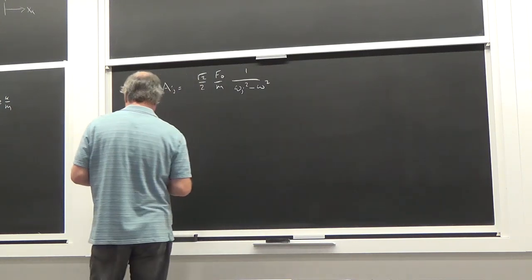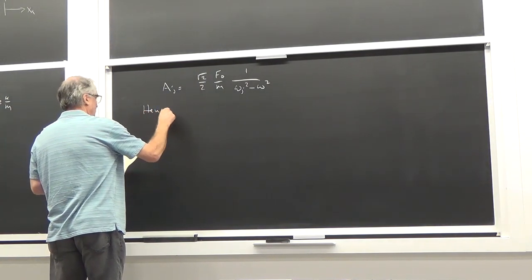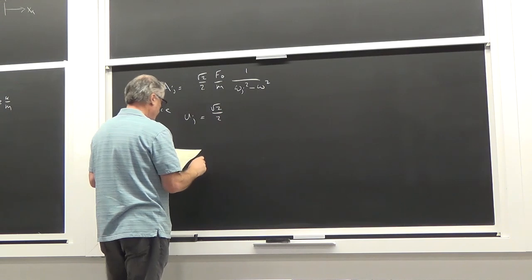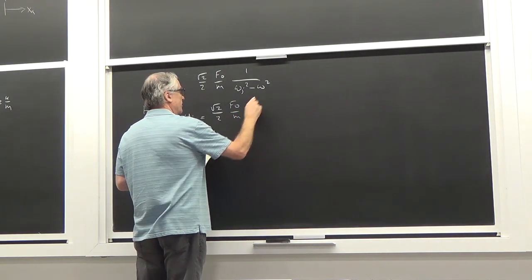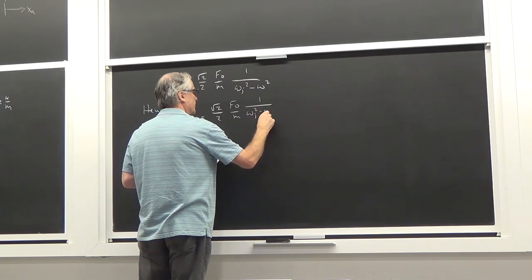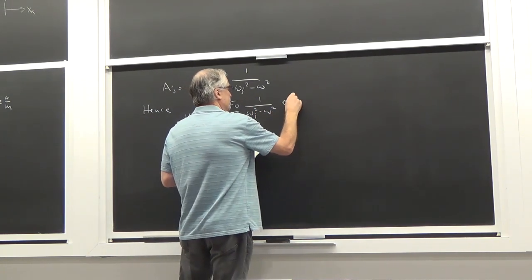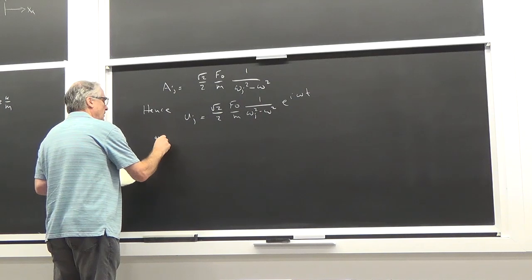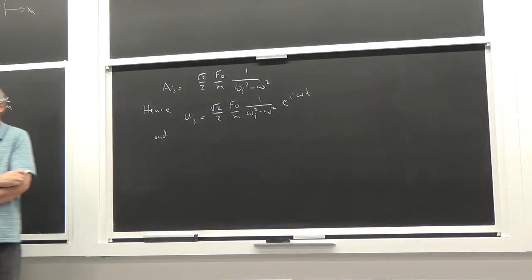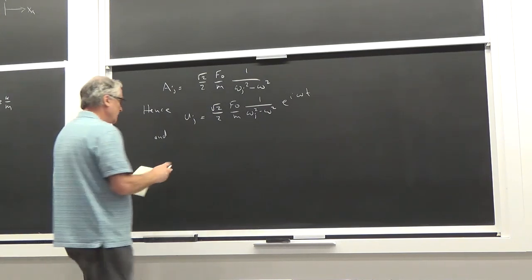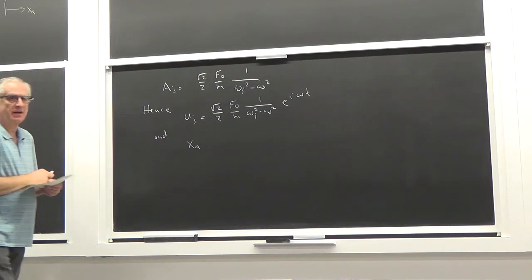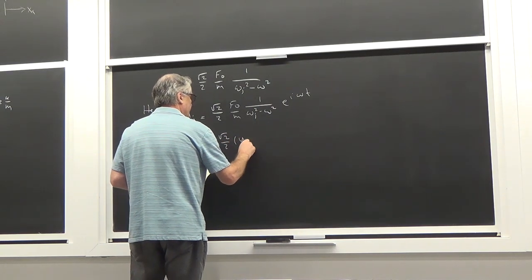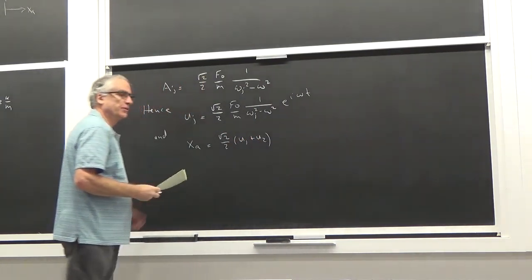So we can write the solutions u_j equals a_j · e^(i·omega·t) = (1/m) · 1/(omega_j^2 − omega^2) · e^(i·omega·t). Then, transforming back to x coordinates, the motion of mass a, x_a, is just (√2/2) times whatever u1 and u2 are.